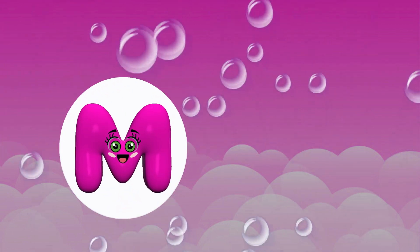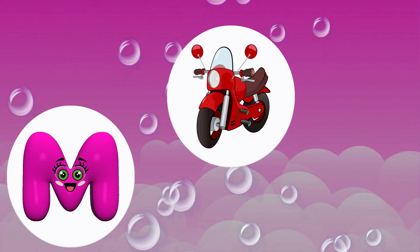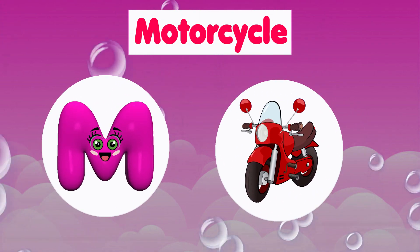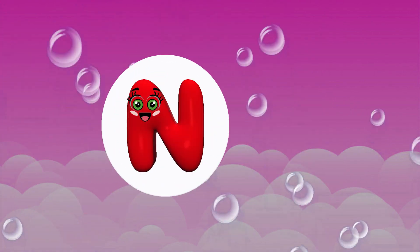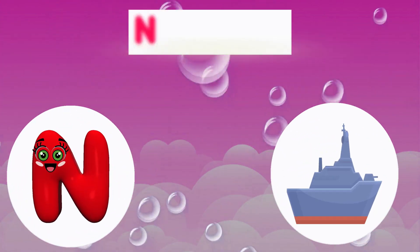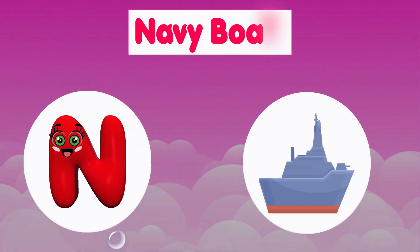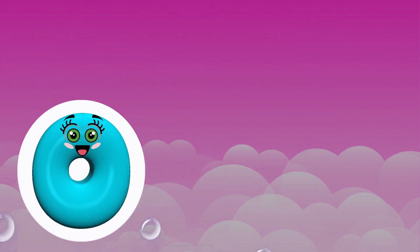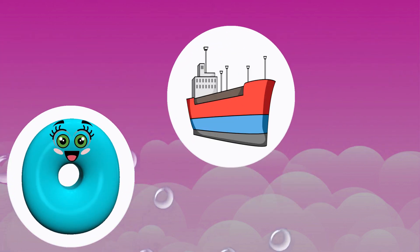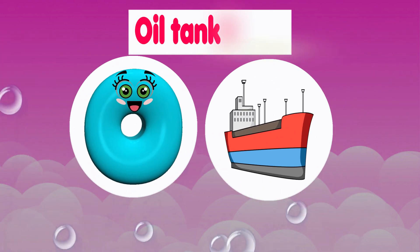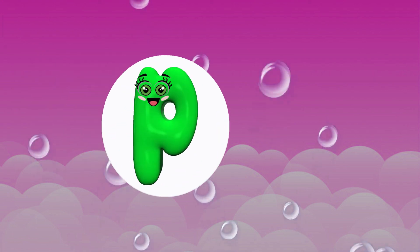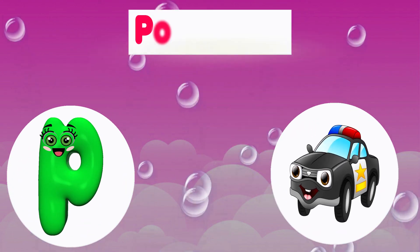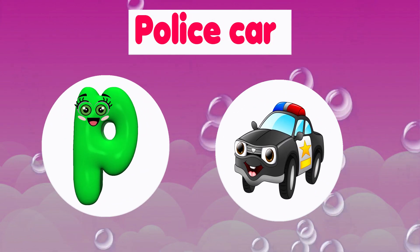M is for Motorcycle. M, M. Motorcycle. N is for Navy Boat. N, N. Navy Boat. O is for Oil Tanker Ship. O, O. Oil Tanker Ship. P is for Police Car. P, P. Police Car.